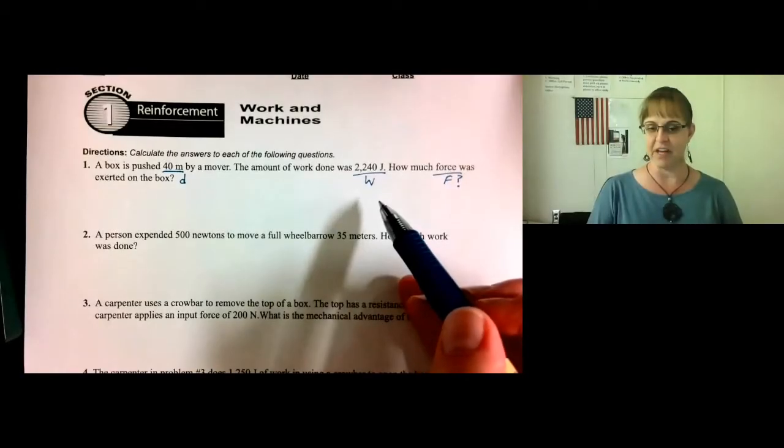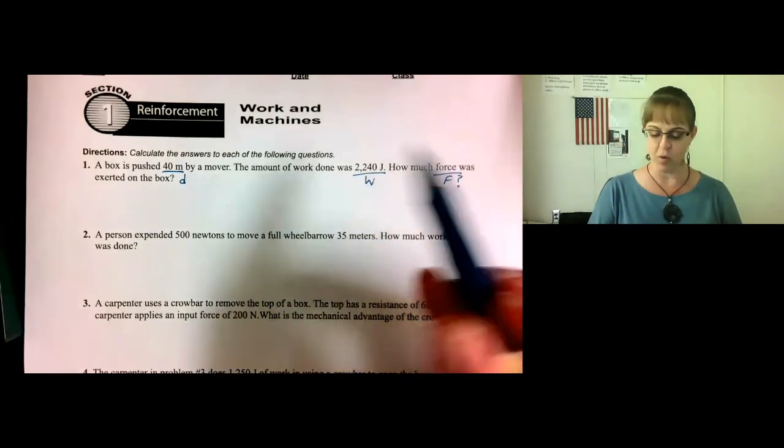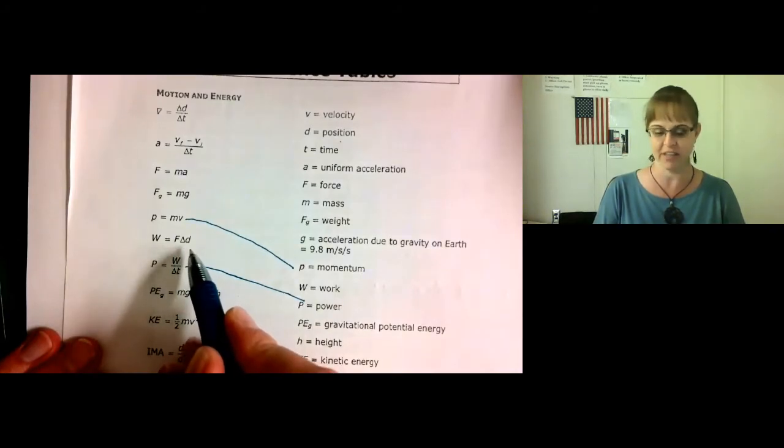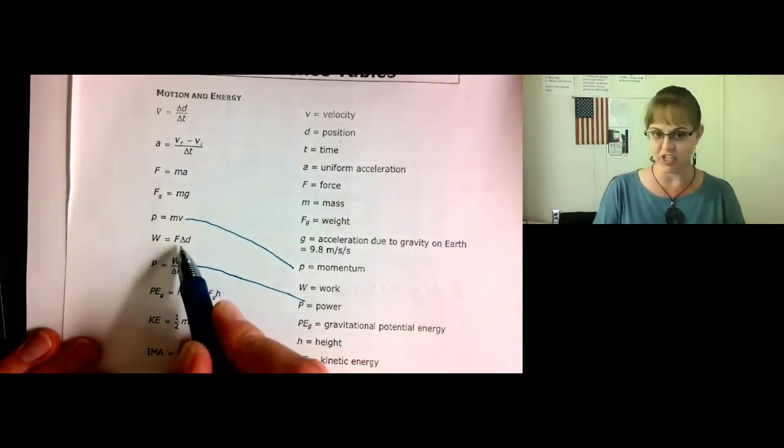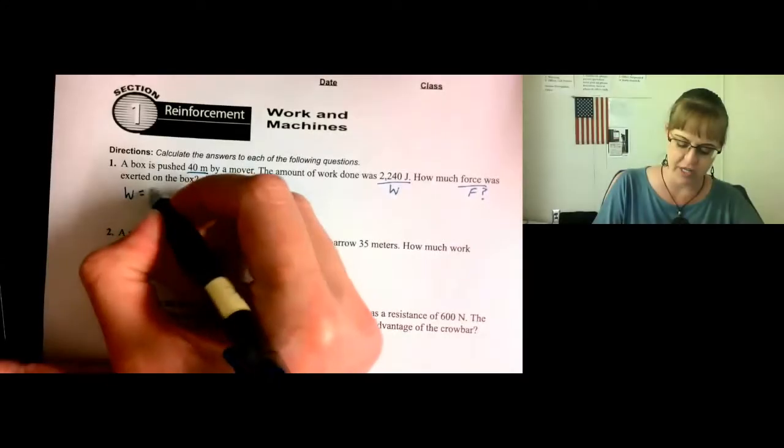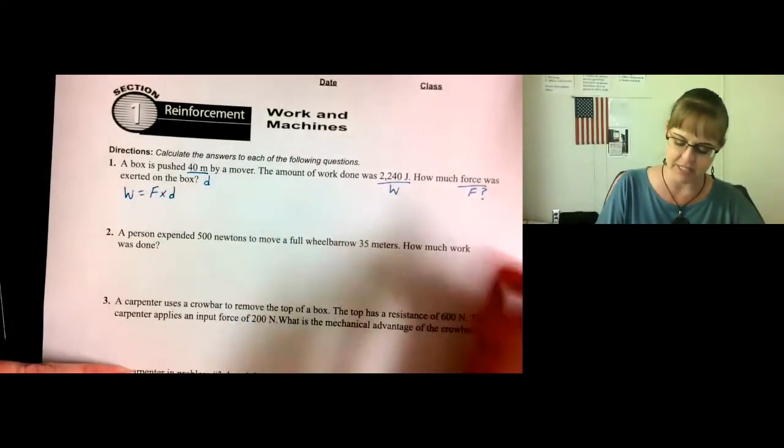Now you need to find a formula with work, force, and distance. Here it is. Work equals force times the change in distance. This delta, change in, just means that you might have to subtract if they give you two numbers, or they might just hand it to you. Work equals force times distance.